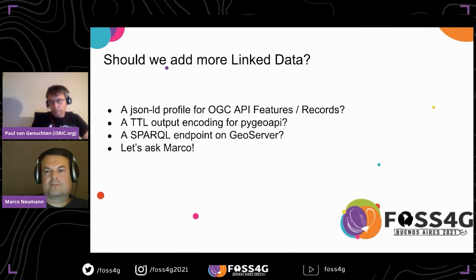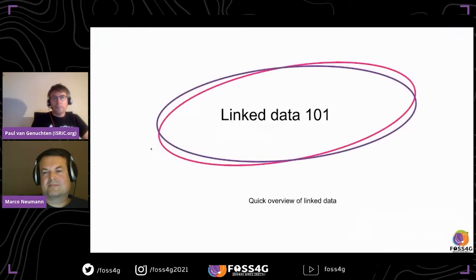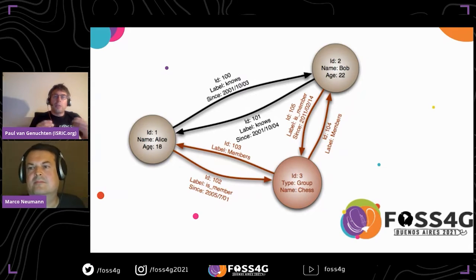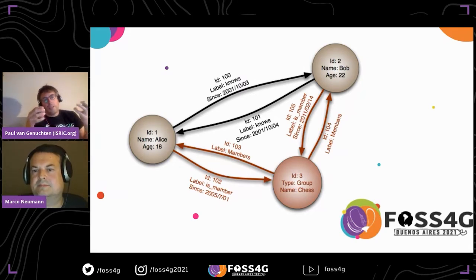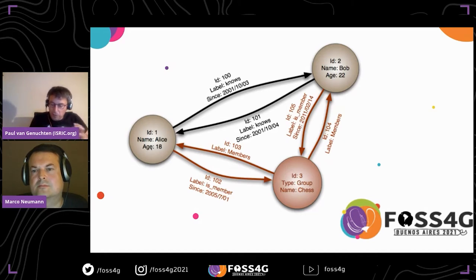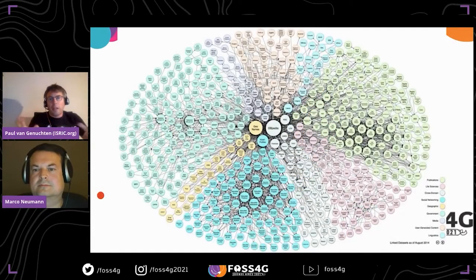First, since this is Linked Data 101, let's cover some basic RDF concepts. The linked data world is based on triples: there is a subject, a predicate, and an object, and the predicate links the subject and object together. For example: my name is Alice, age is 18, and I know Bob whose age is 22. If you have many of these triples together, you arrive at a big network of links — one massive cloud of data.